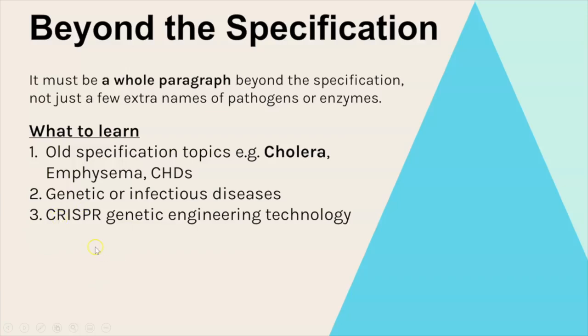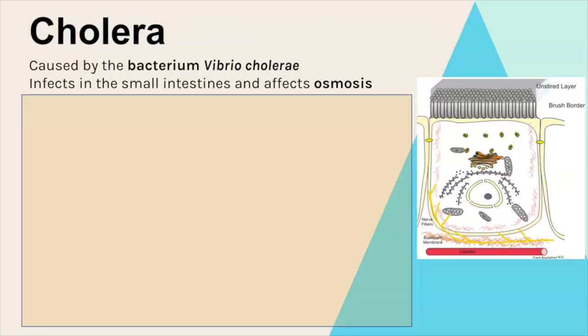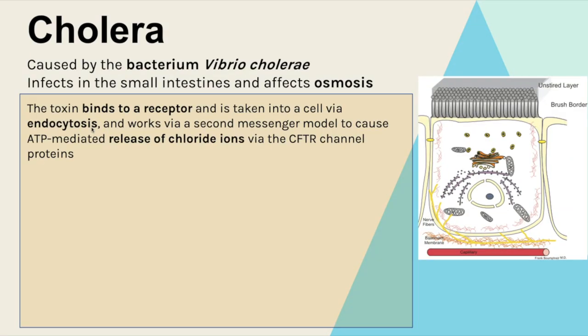So you could look at that, but the one that I'm going to focus on which I think is your best option is cholera. So I'm going to talk you through what used to be on the specification for cholera and this is what to learn to write for a paragraph, and then I'll show you which essay title this would be relevant for. Let's go through then how cholera actually affects the host. First of all it's caused by bacterium Vibrio cholerae and infects the small intestines and as a result it ends up affecting osmosis.